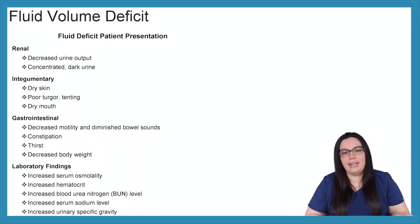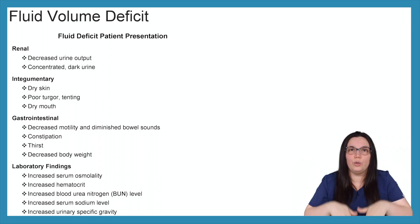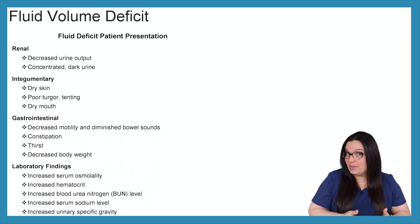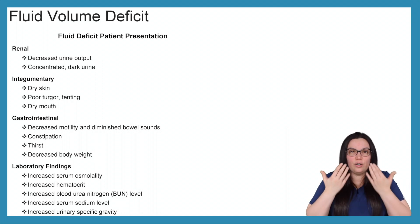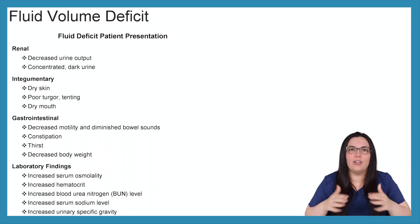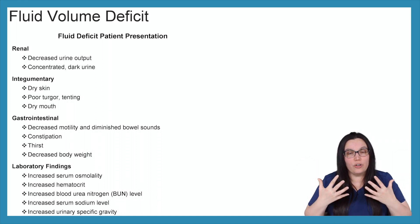So when it comes to our laboratory finding, like we talked about before with fluid volume overload, everything is going to be decreased. Why? Because all of that excess fluid is diluting our system. Whereas with our fluid deficit, everything is going to be increased because we don't have enough volume. Nothing's getting diluted. Everything is highly concentrated. So you're going to have an increased serum osmolality, increased hematocrit, blood urea nitrogen, BUN levels, serum sodium is going to be increased, as well as your urinary specific gravities.